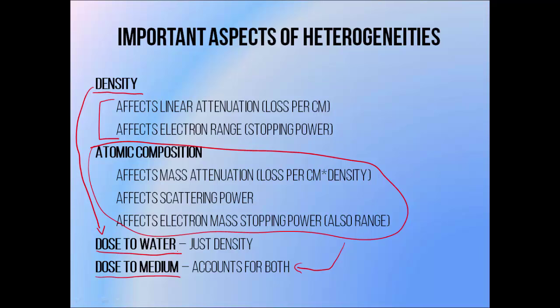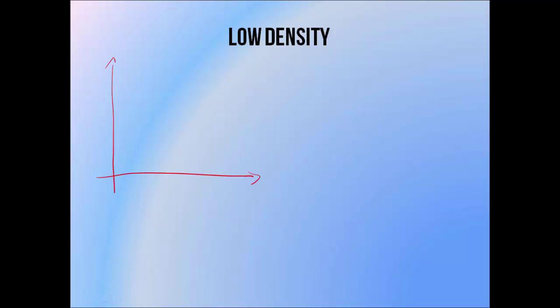Dose to medium is becoming more relevant though, since newer generation algorithms like Monte Carlo and linear Boltzmann transport equation based planning systems often calculate in terms of dose to medium instead of dose to water. If you look through the textbooks and literature at the effect of low density heterogeneity such as lung on dose distributions, you'll see that PDD curves can look quite a bit different depending on the situation.